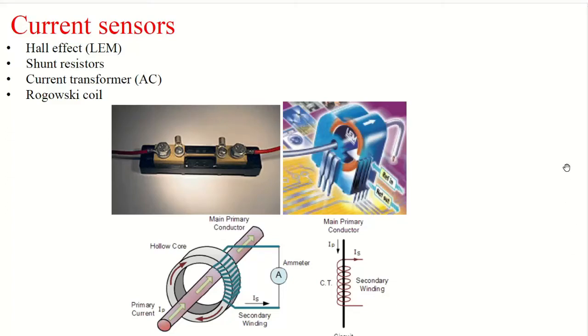Now the other sensors are current sensors. So we need to control a motor or a micro power plant or any electrical systems. The main issue is to control its current. So we need to sense it. We have different sensors.